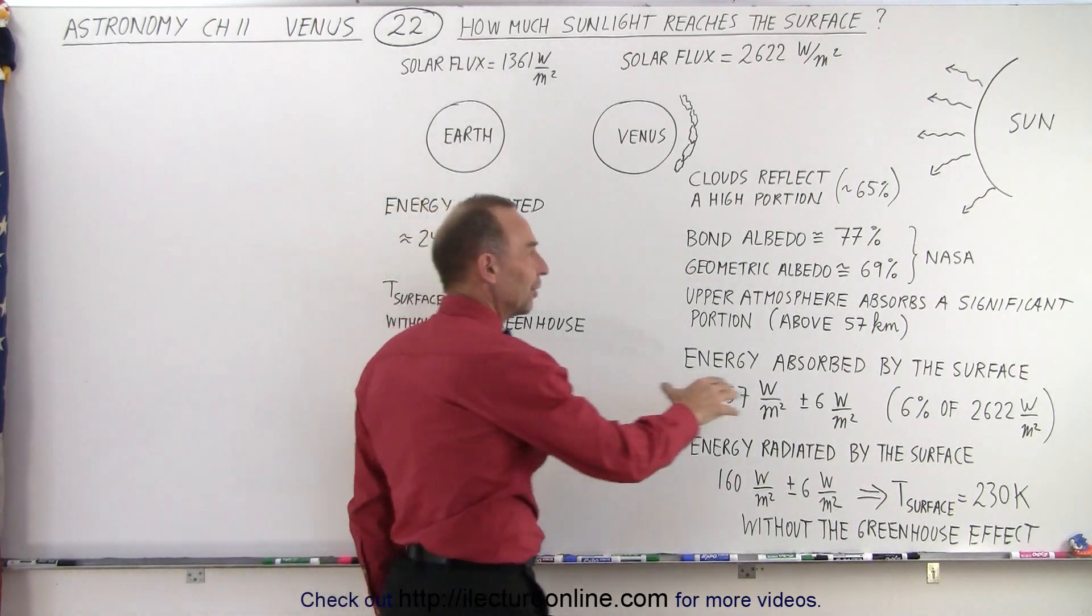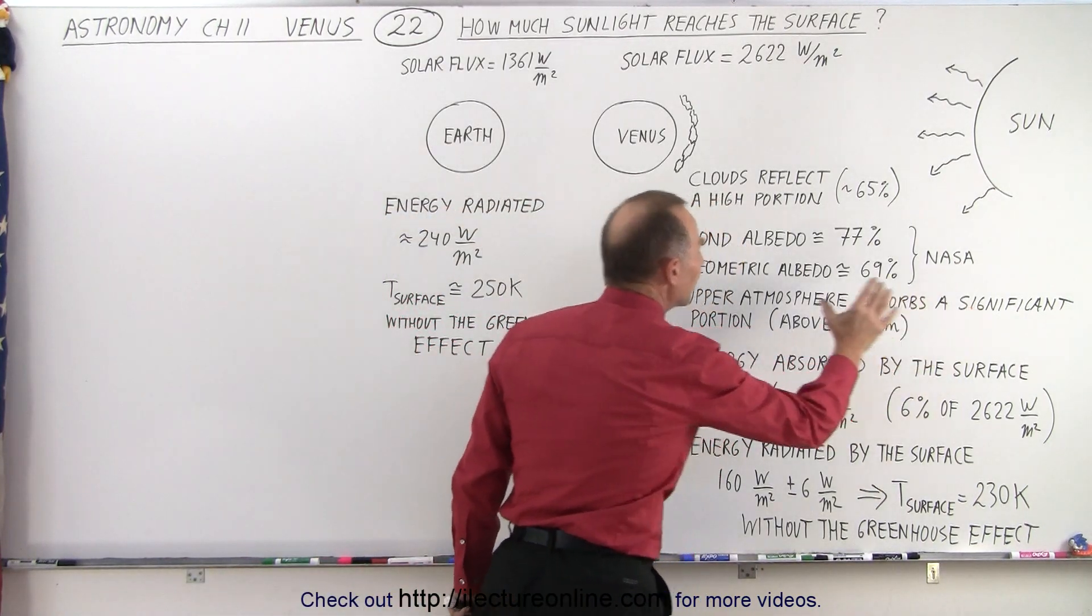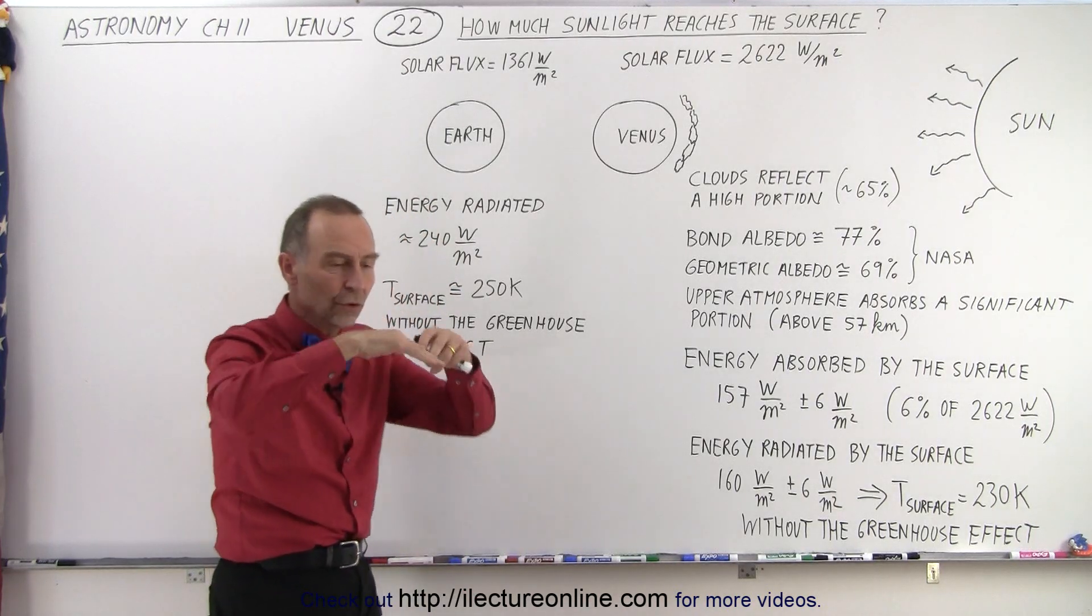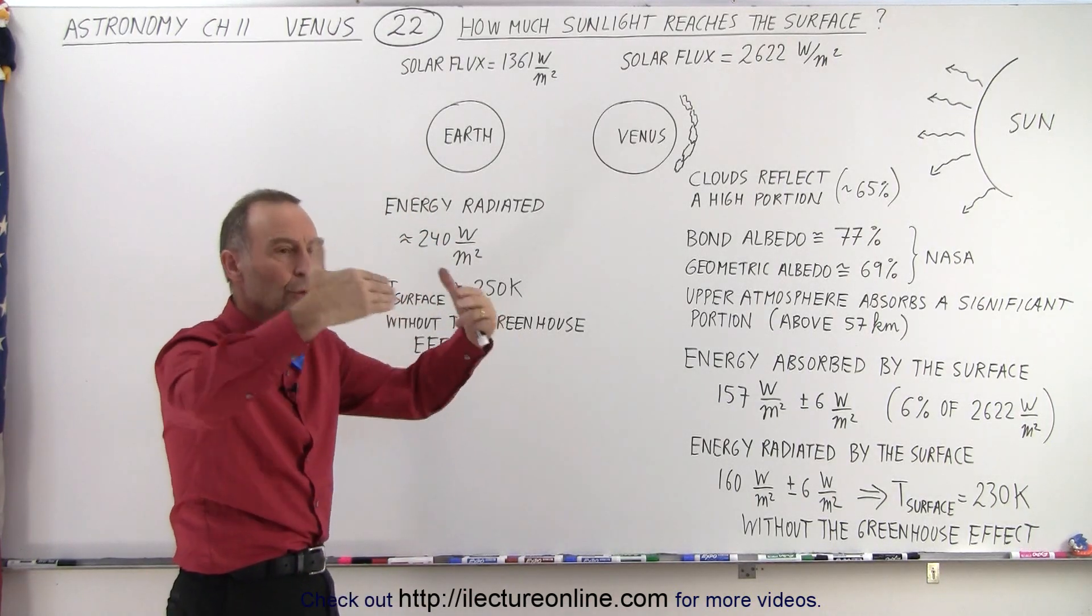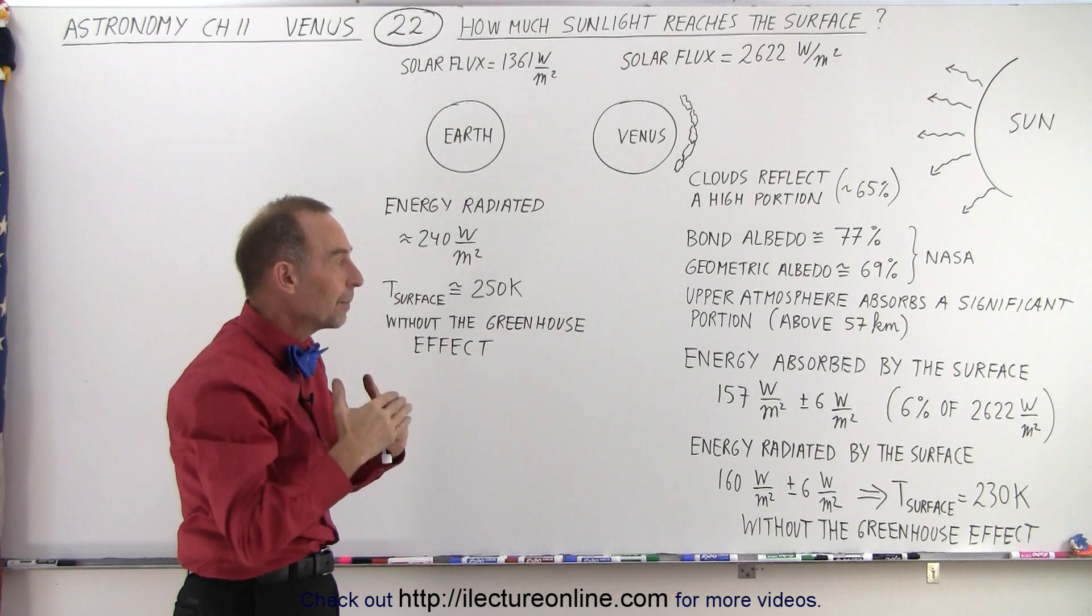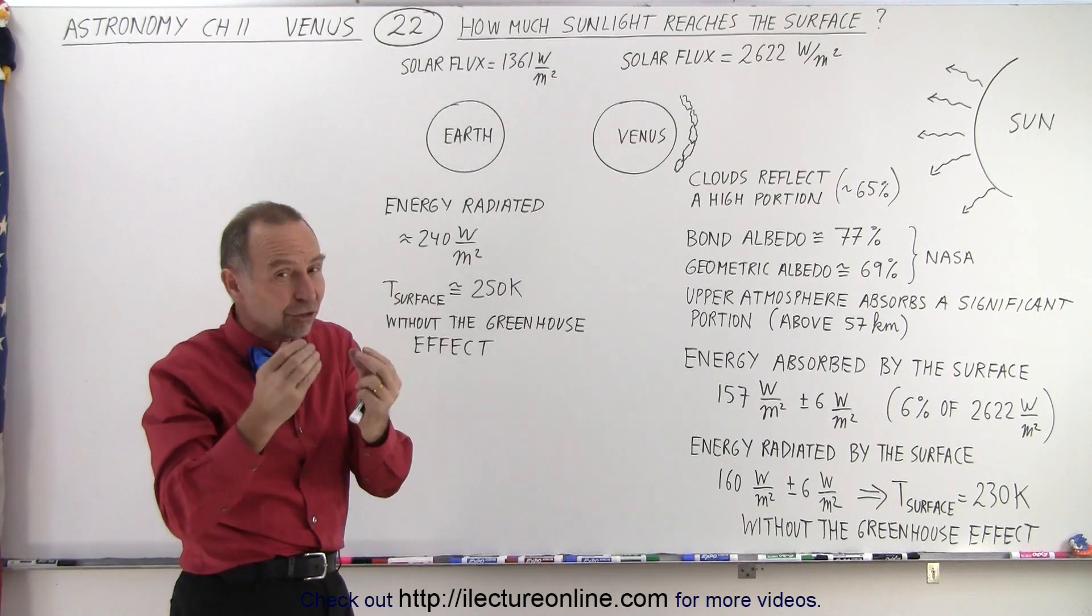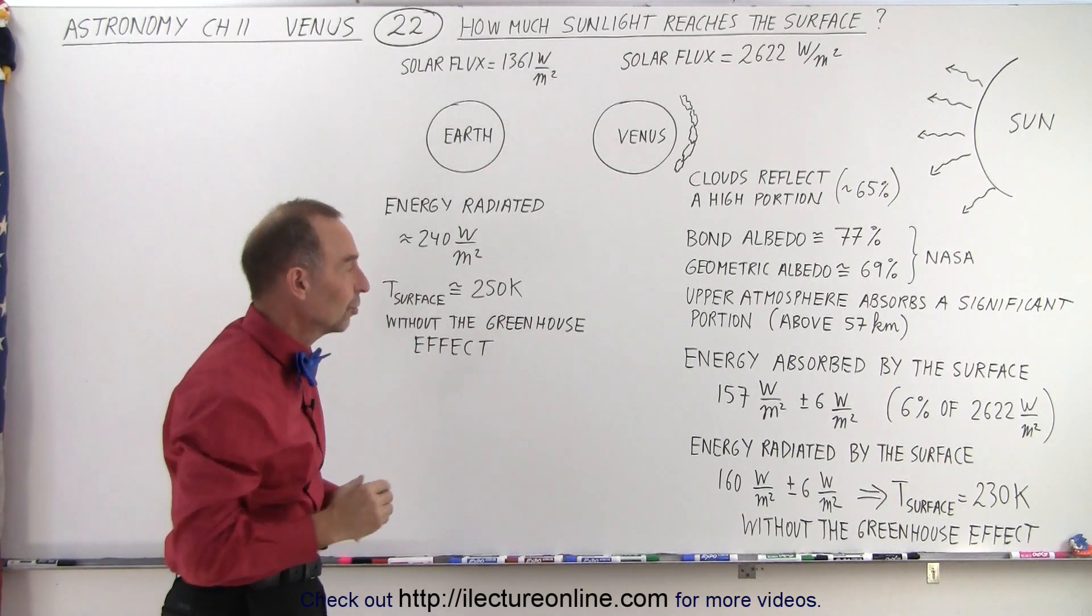The upper atmosphere absorbs an additional significant amount above an altitude of 57 kilometers. So the gases in the atmosphere also absorb a significant amount of sunlight coming in such a way that a very small portion actually makes it to the surface.